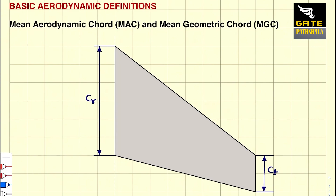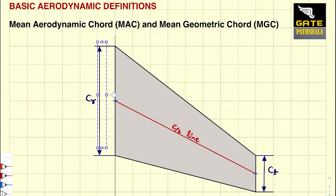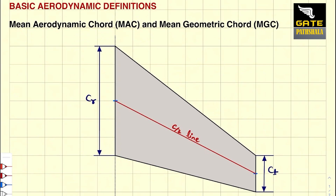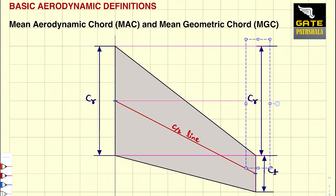What we do is we find the midpoint of the root chord and the midpoint of the tip chord, then we join these two points. This gives us a C/2 line. Now we measure this particular distance, which is CR — the root chord — and we place this here.